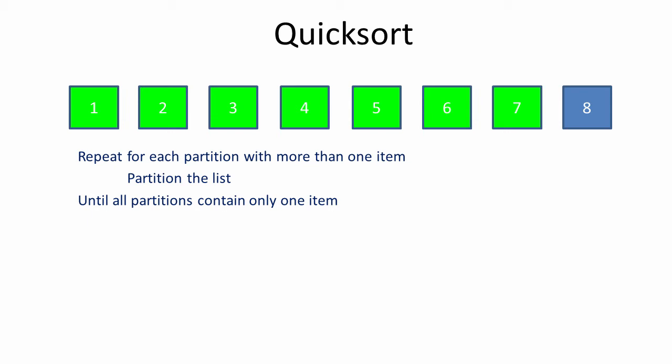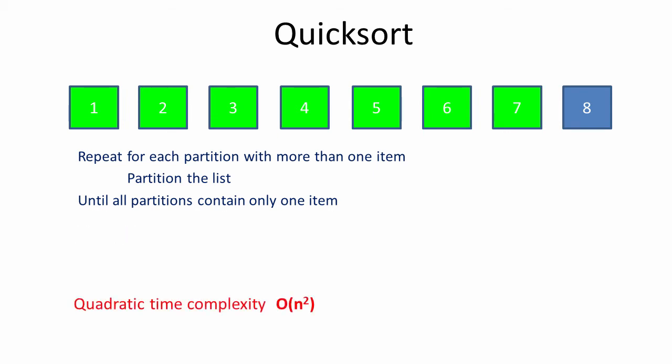If instead we started with a list of 16 items, then we're going to need 16 plus 15 plus 14 — and so on — a total of 120 comparisons. Clearly, the relationship between the amount of input data and the amount of processing required is not linear. Doubling the amount of data has roughly quadrupled the work needed. For n items of data, we need (n−1) + (n−2) + (n−3), all the way down to 2 + 1 comparisons. This can be shown to equal n(n−1)/2, whose dominant term is n². So the worst-case time complexity of the quicksort is quadratic — O(n²).